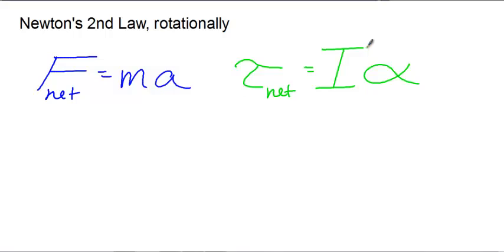So torque equals I alpha is another expression. We have two expressions for torque: torque equals F times r and torque equals I alpha. Thanks!